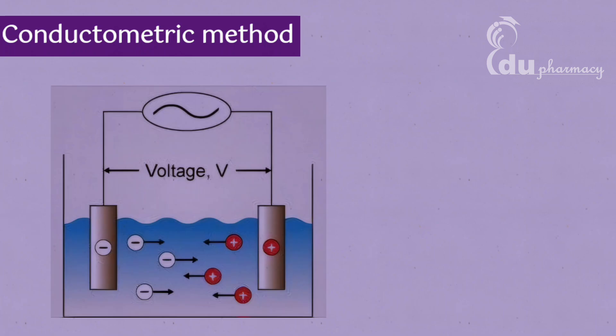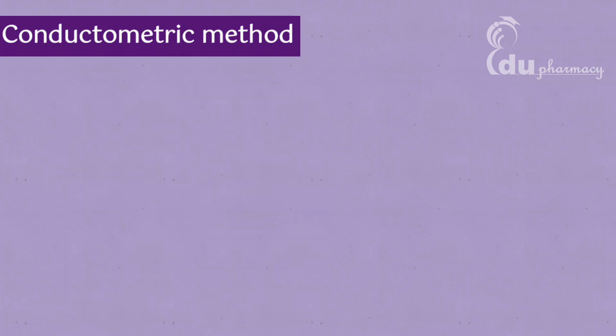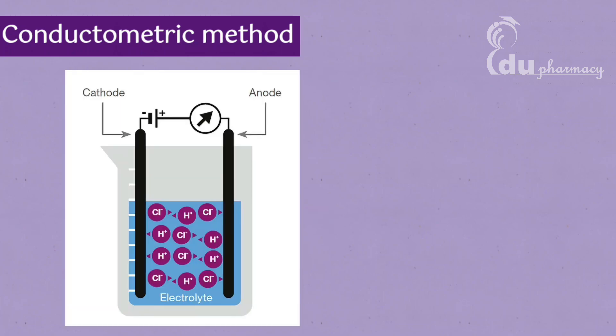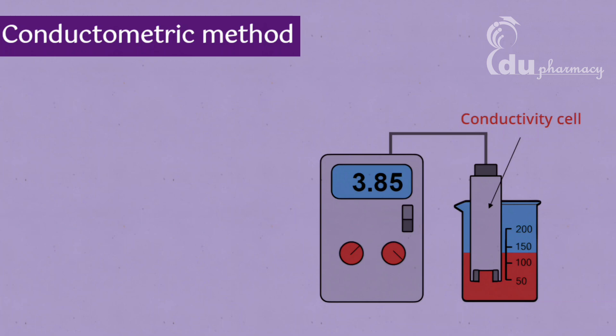Conductometric method. This method measures the electrical conductivity of a solution. The conductivity of a solution is a measure of the concentration of ions in the solution. Solute molecules that dissociate into ions in solution will increase the conductivity of the solution. By measuring the conductivity of solutions with different concentrations of the solute, a calibration curve can be constructed. This curve can then be used to determine the concentration of the solute in an unknown solution.